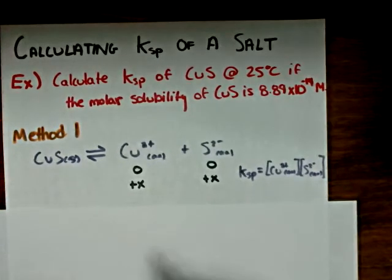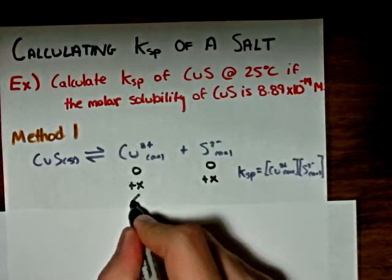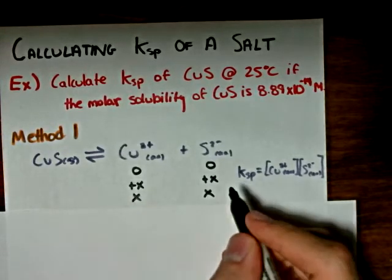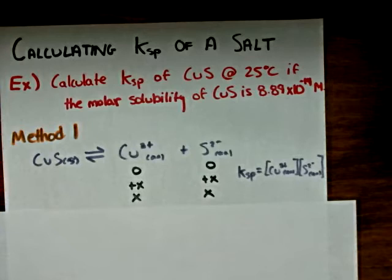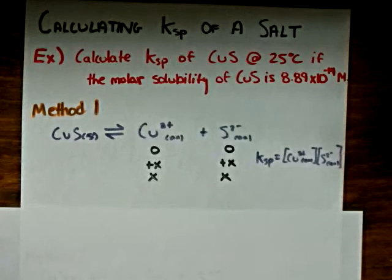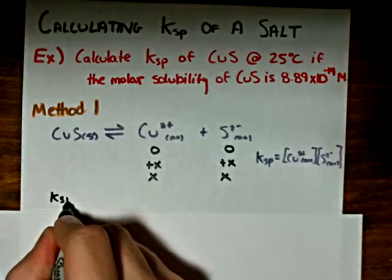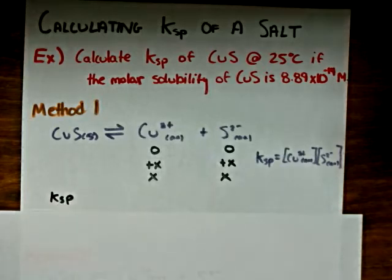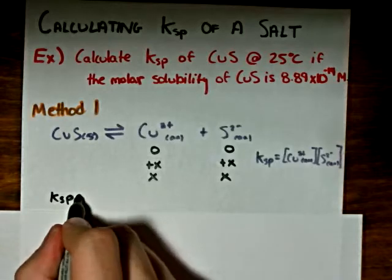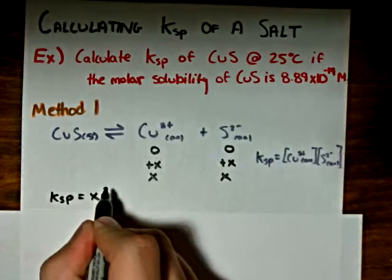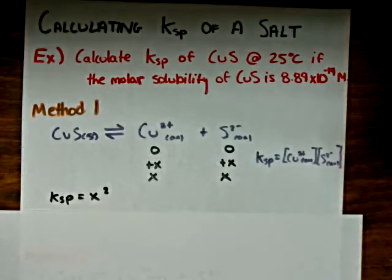So that at equilibrium, we have a concentration of X for both of the ions. And we know from our equilibrium expression that the Ksp value will be equal to X squared, because the concentration of both of the ions is equal to X.